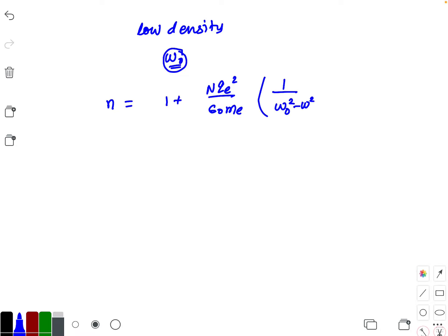minus omega square, and this whole term to the power 1 by 2. Now for low density gases, the index of refraction is very nearly equal to 1, so this whole quantity is very small.